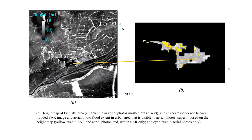This shows the final result. A shows the height map of the Fishlake area, with the area visible in the aerial photos masked out in black. B shows the correspondence between the flooded SAR image and the aerial photo flood extent in the urban area that is visible in the aerial photos, superimposed on the height map.